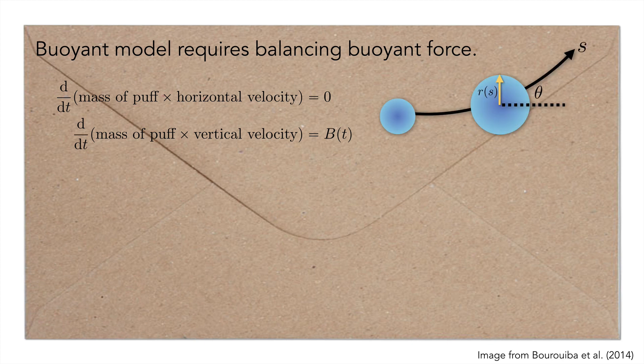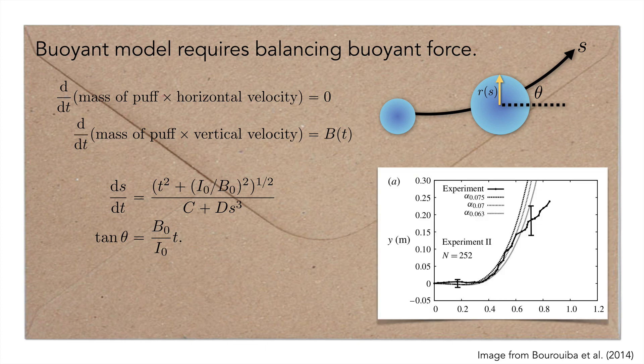The goal is to solve for the puff location along the center line, given by S, and its angle of deflection, θ. When this is done, it's possible to obtain an equation for S and an equation for θ, which depends on constants like the initial momentum I_0, the initial buoyancy B_0, and so forth. These equations can be solved in closed form. The authors do that and confirm with their experiments to show that this third phase can be approximated as well.